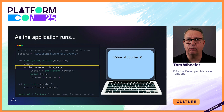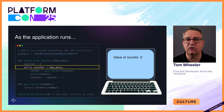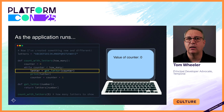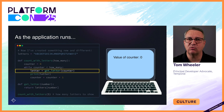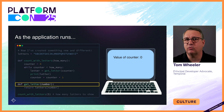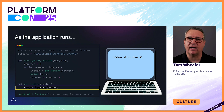Now it reaches a while loop, evaluating whether the program has counted to five yet. Since the counter is zero, it enters that loop. Here's the other function call, which passes the current count as a parameter and assigns the result to a variable called 'letter'. It just retrieves the letter of the alphabet corresponding to that number, using that number as an index within the string of letters defined at the top.